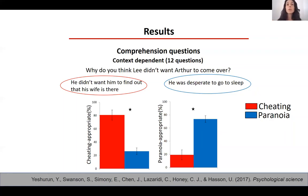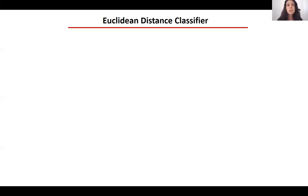We were interested in testing for context-dependent brain response. Our main analysis task was to identify voxels or regions that could discriminate between the two contexts. For that, we developed a classifier based on Euclidean distance. The classifier works as follows.